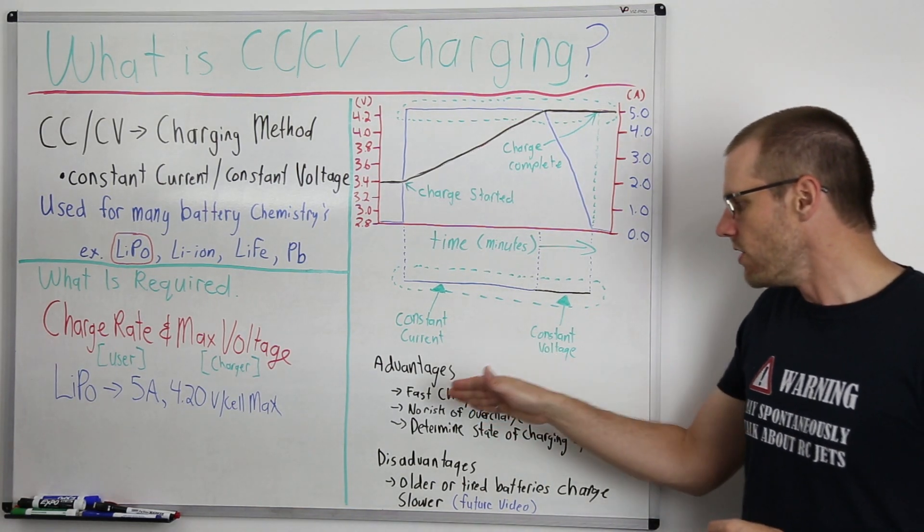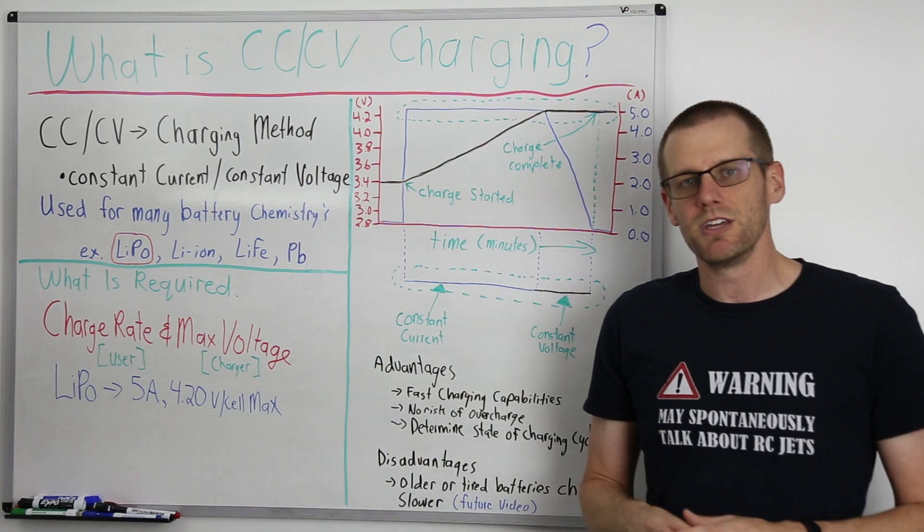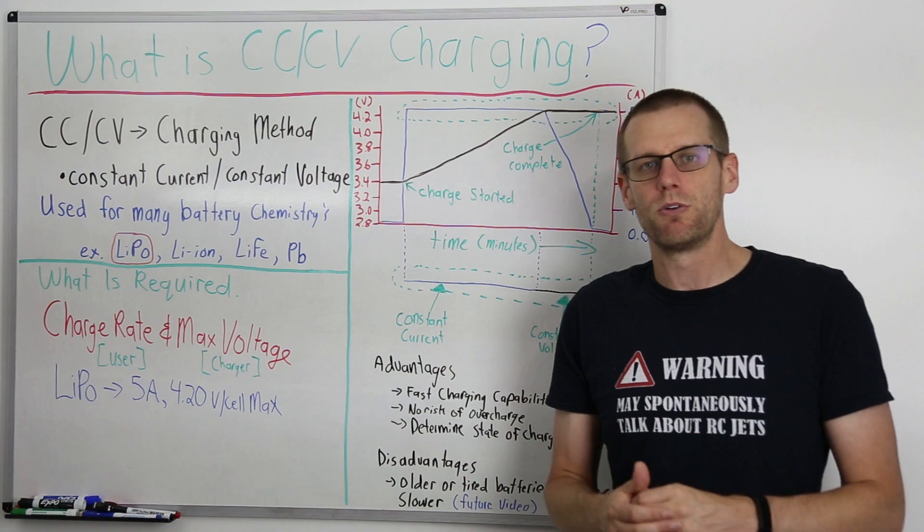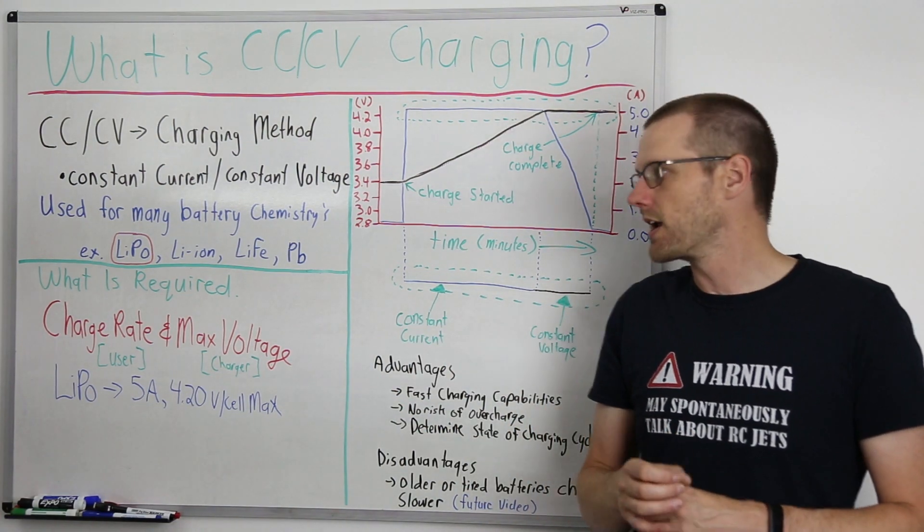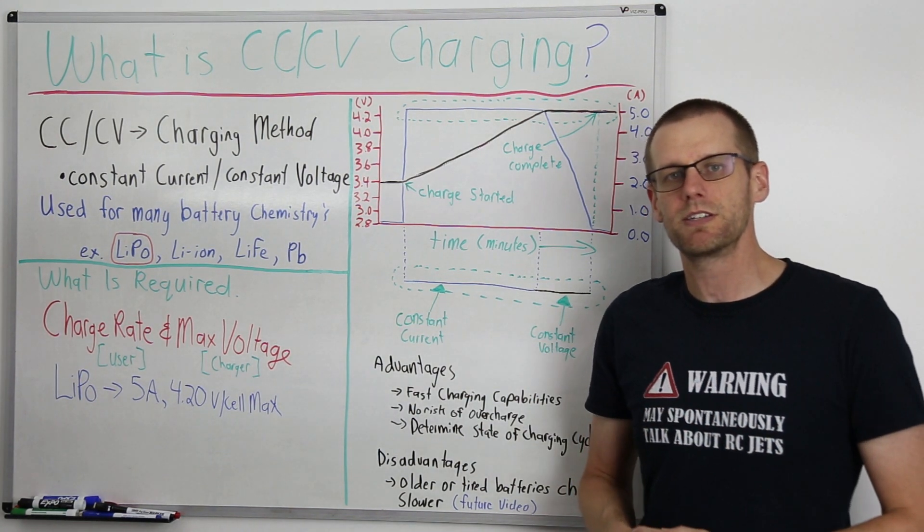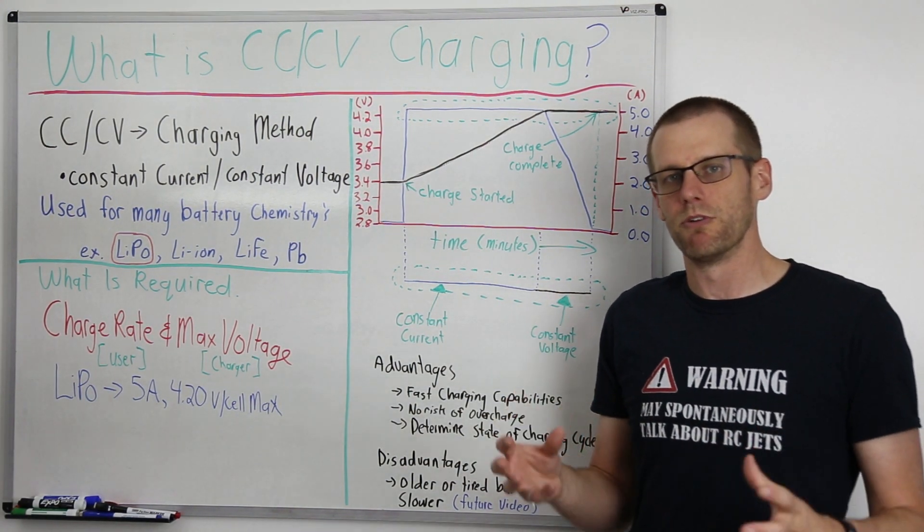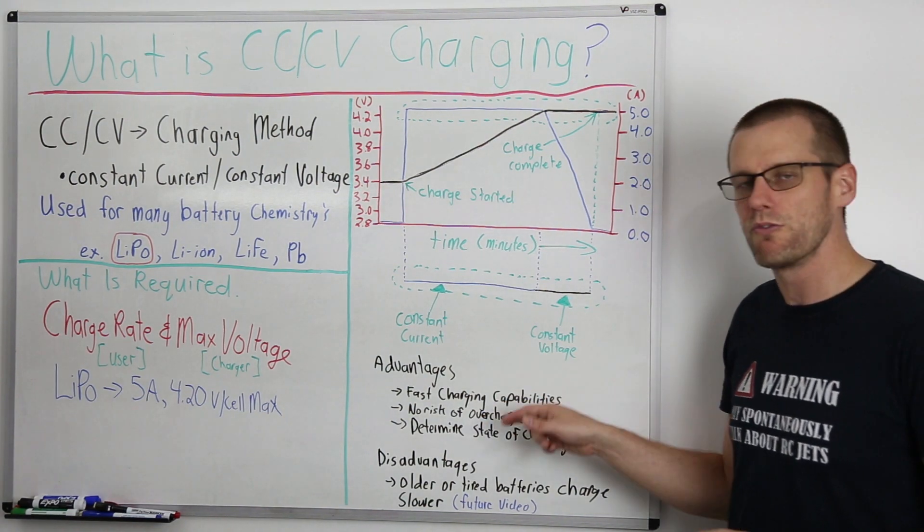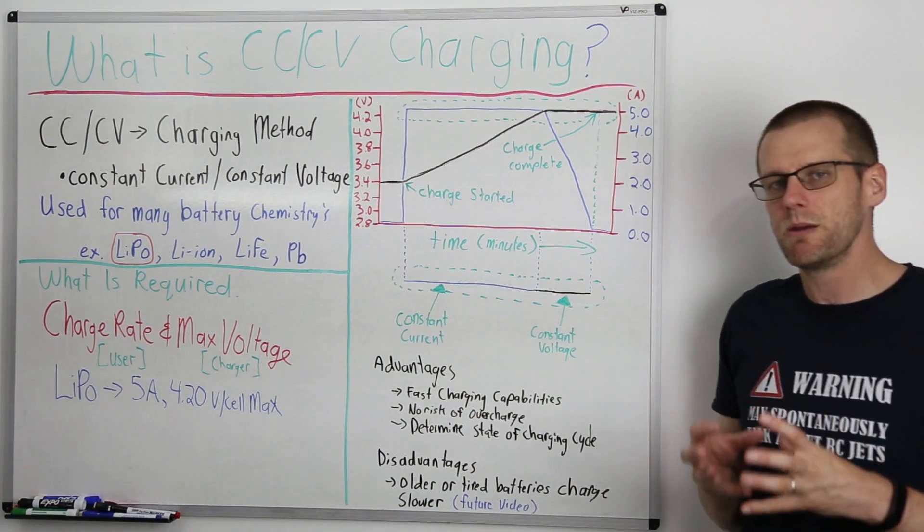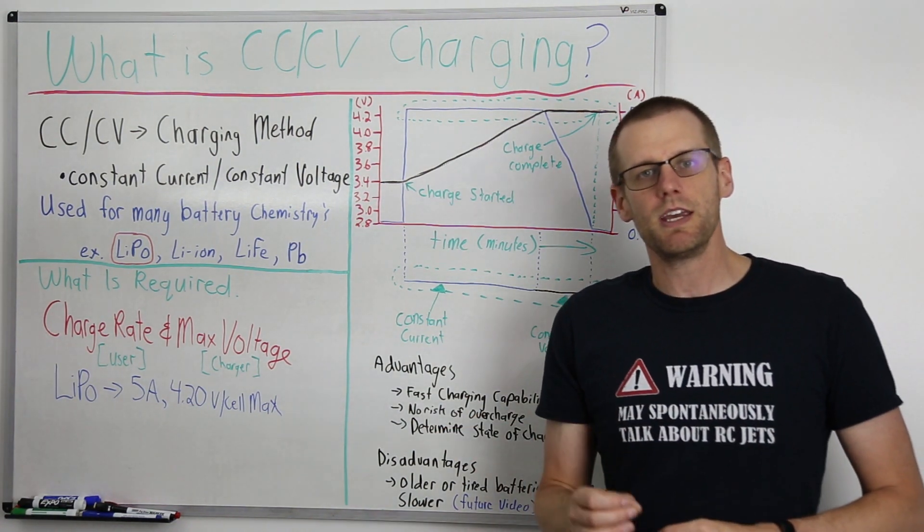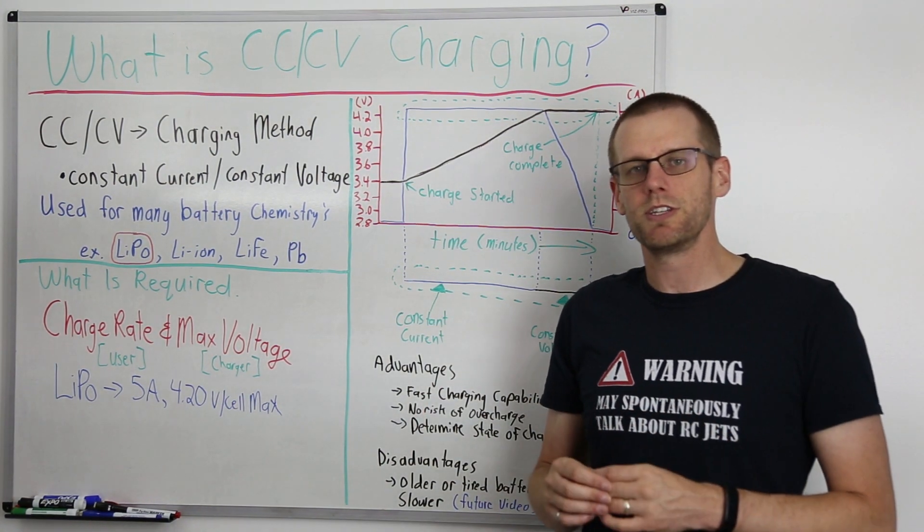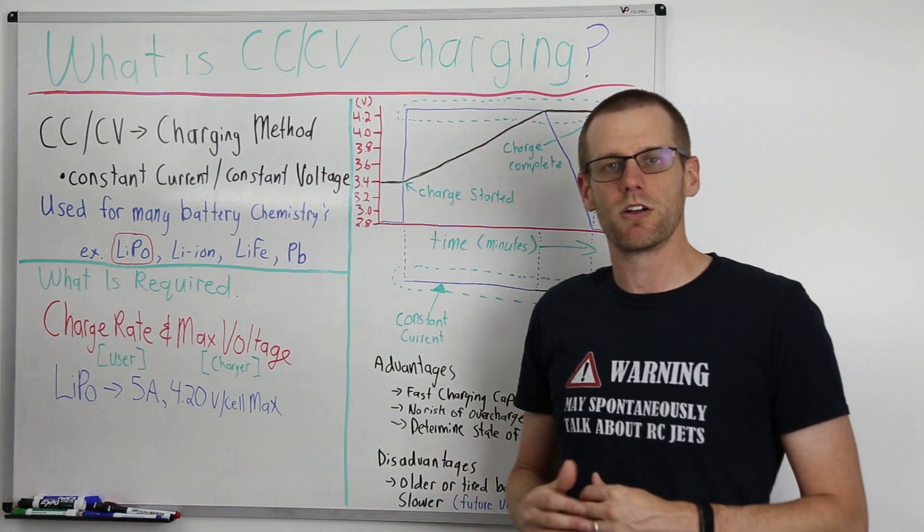We also have no risk of overcharging a battery using this specific method. We're not going to go beyond 4.20 volts which could damage the pack using this charging rate. Our charger using this method is designed to make sure that the voltage never exceeds that maximum voltage. And if that is true, we will never overcharge our packs. The last item that we have here under advantages is we're able to determine the state of charge within our charging cycle. I can quickly just glance at my charger and see if it's on the ramp down cycle.